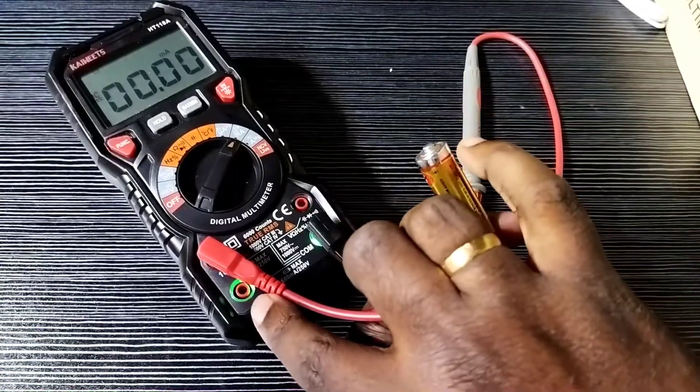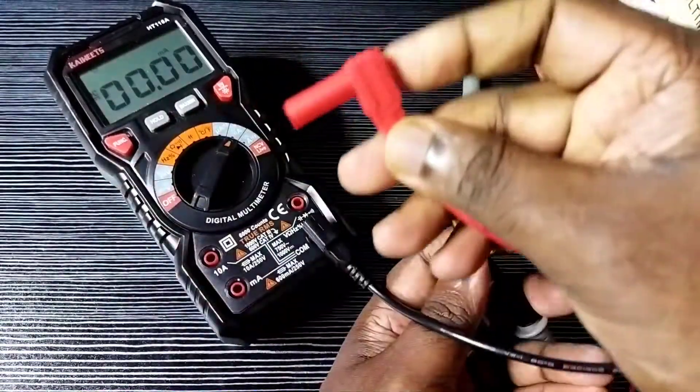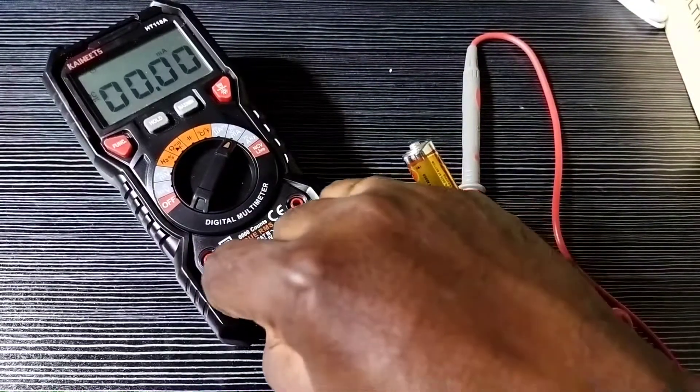We need to change the red cable. Remove it from the 10 amp port, then connect to the micro amp port.